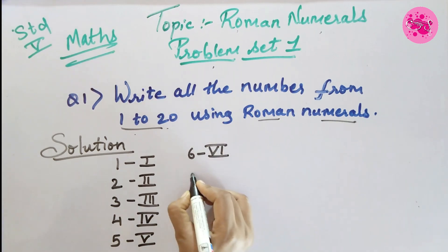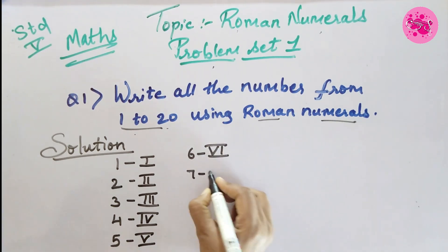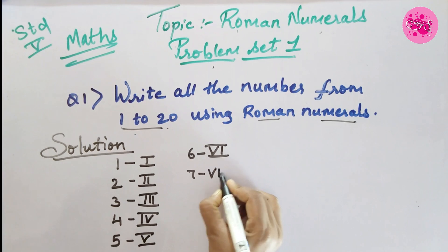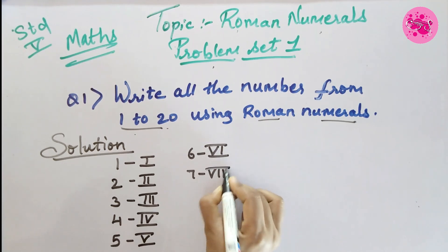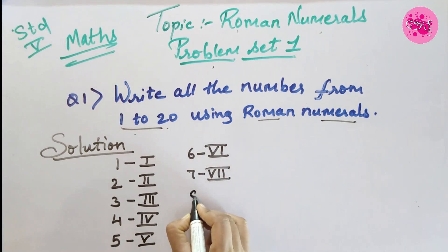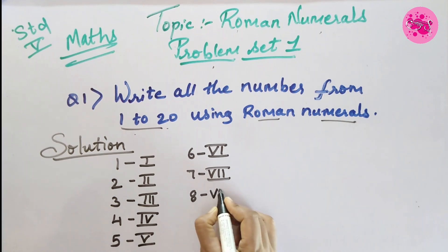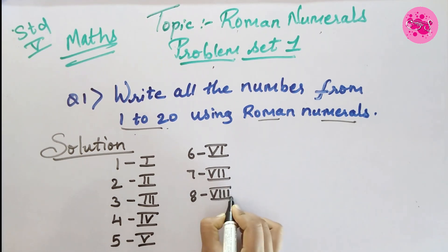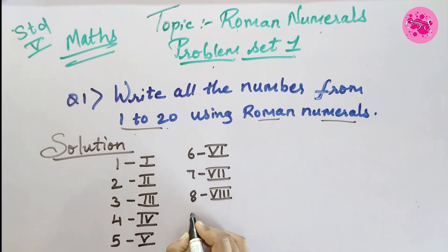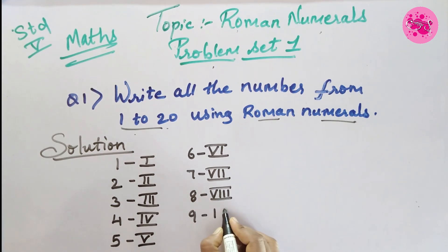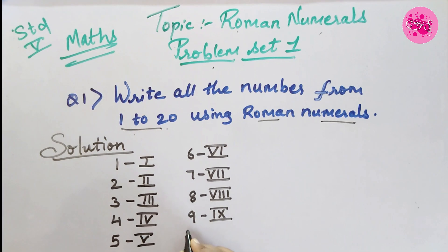For 7 we write V and II (VII). For 8 we write V and III (VIII). For 9 we write I in front of X (IX). For 10 we write X.